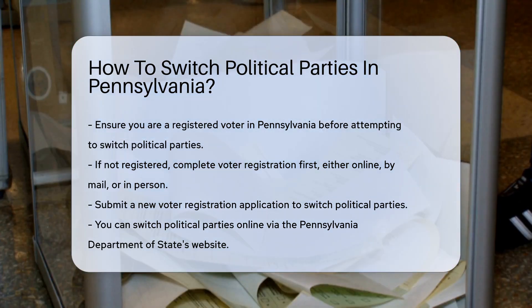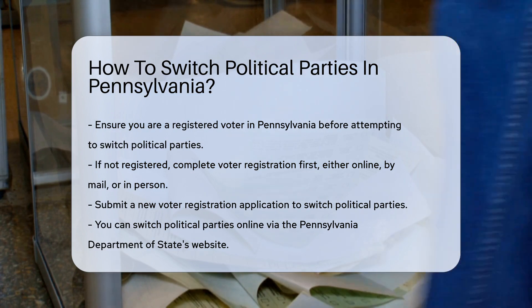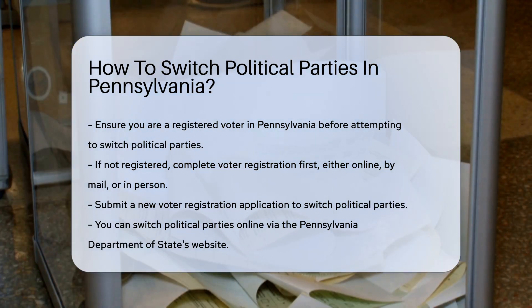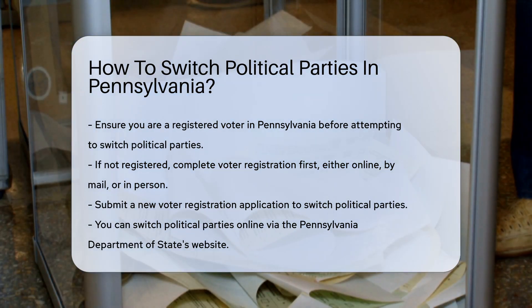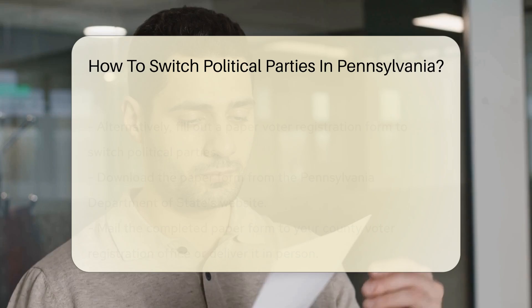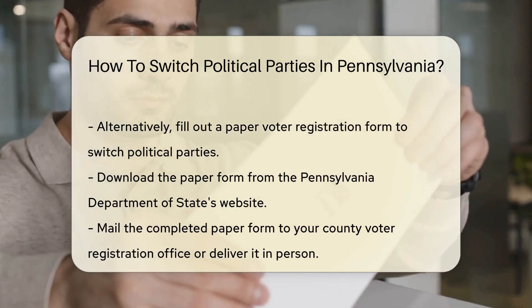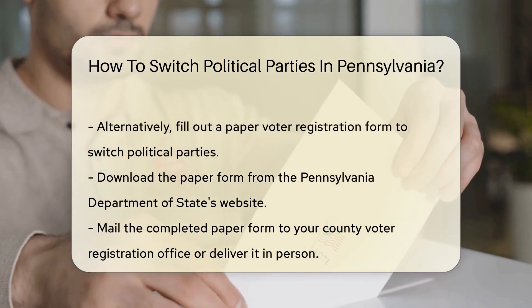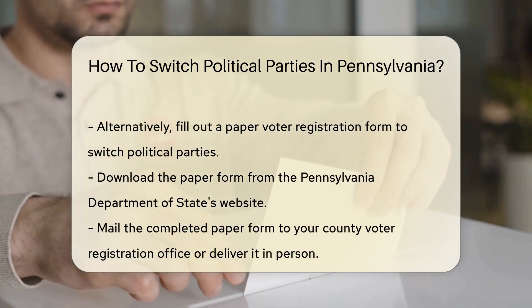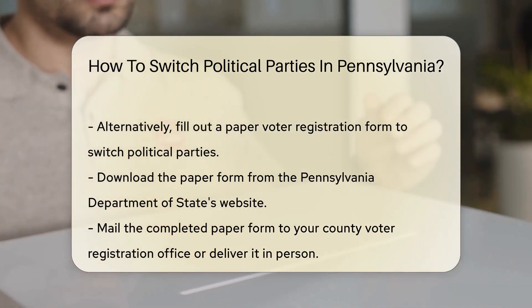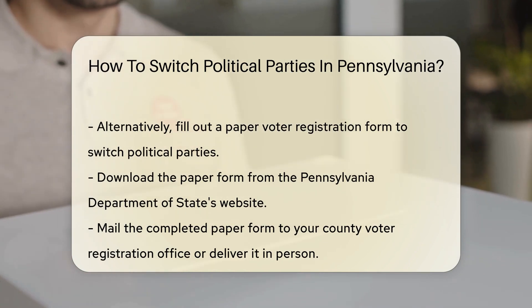To switch political parties, you must submit a new voter registration application. You can do this online through the Pennsylvania Department of State's website. Alternatively, you can fill out a paper voter registration form, which you can download from the Pennsylvania Department of State's website. Once you have filled out the form, mail it to your county voter registration office.